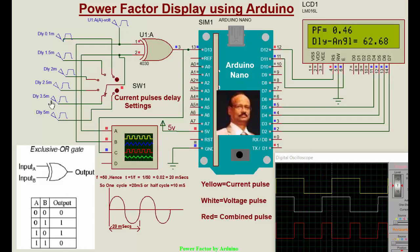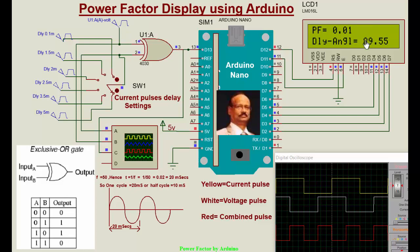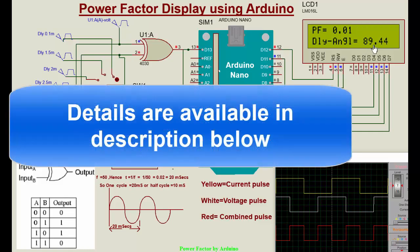At 3.5 milliseconds we see the corresponding power factor. When we delay by 5 milliseconds, that represents 90 degrees, and cos 90 is zero, so the power factor is nearly 0.01 — essentially zero — and the delay angle reads approximately 90 degrees. This is how we display power factor using Arduino.